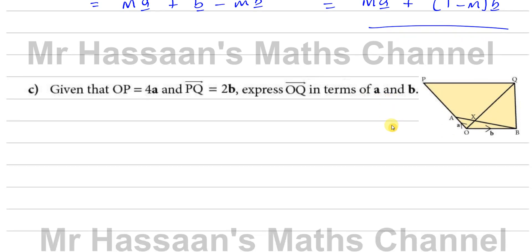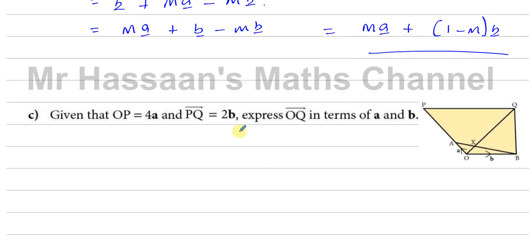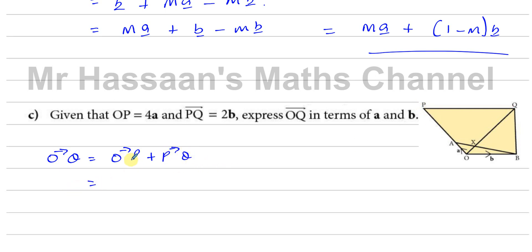Part C: given that OP equals 4A and PQ equals 2B, express OQ in terms of A and B. To go from O to Q, I go from O to P and then from P to Q. So OQ equals OP plus PQ, which is 4A plus 2B. Simple as that — that's the answer to part C.